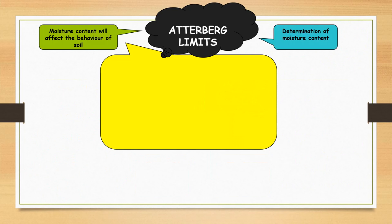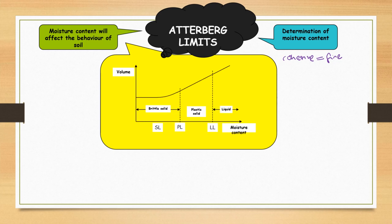So what is actually the Atterberg limit test? This test is carried out to further classify the type of cohesive soil. Cohesive soil means fine-grained soil, and the determination is associated with moisture content — specifically the moisture content at which the soil deforms from plastic to liquid.